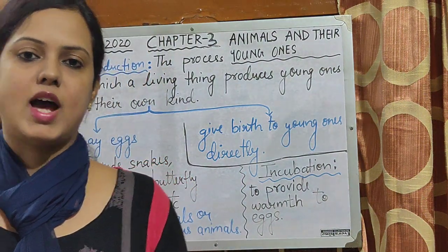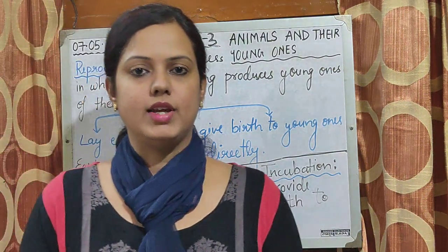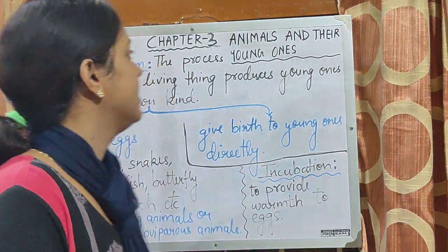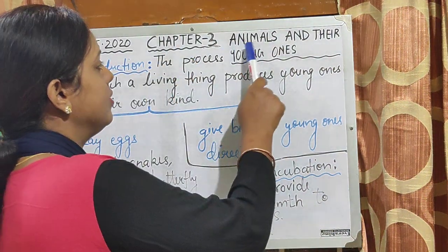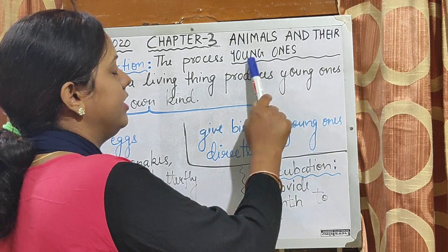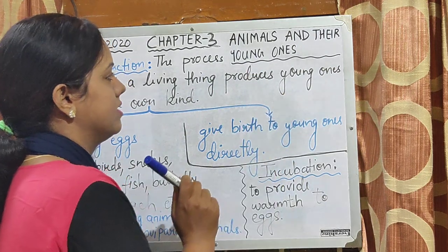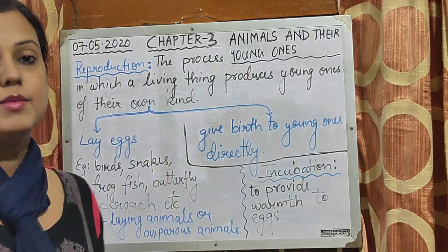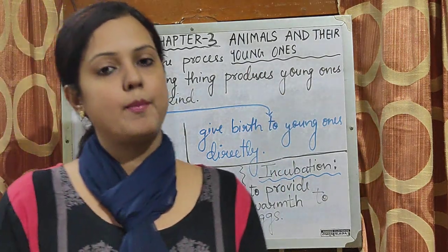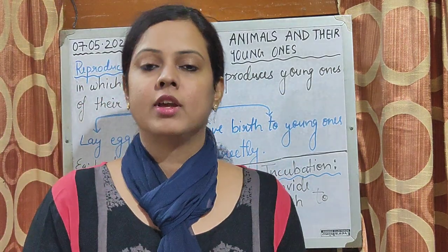Today we are going to start chapter number 3 — Animals and their Young Ones. Animals aur unke bache.